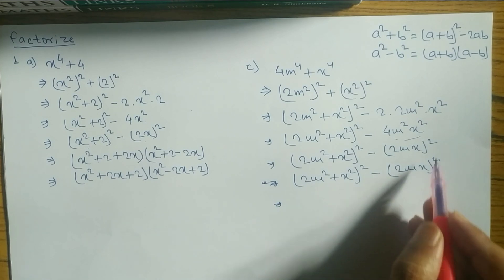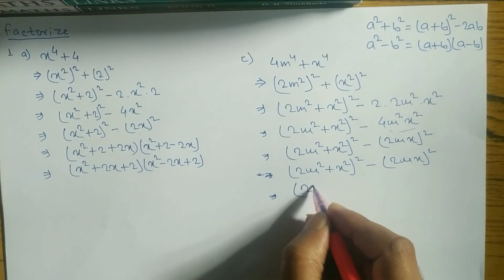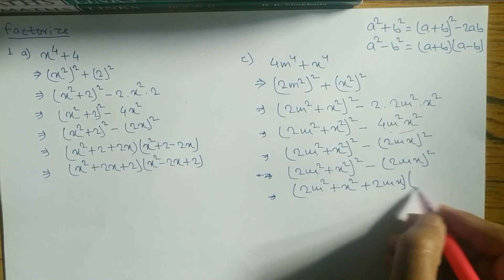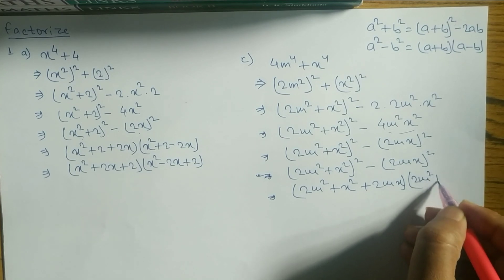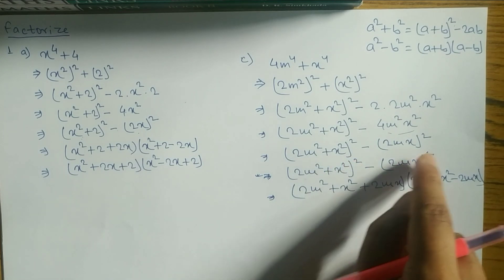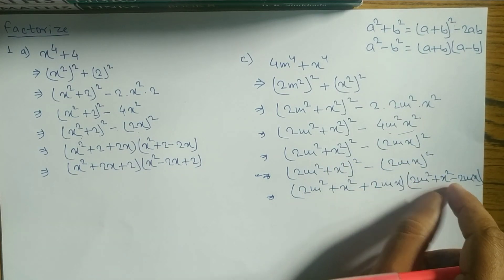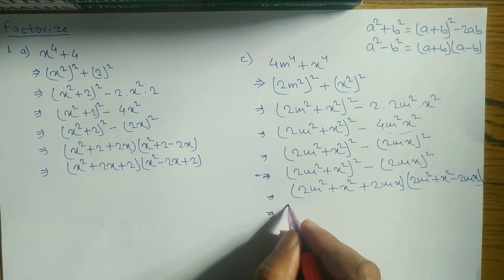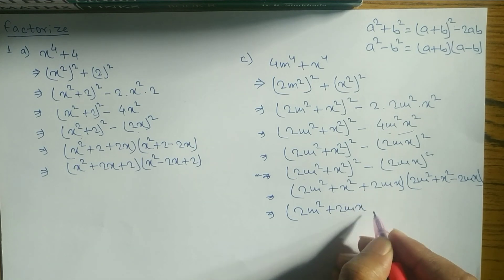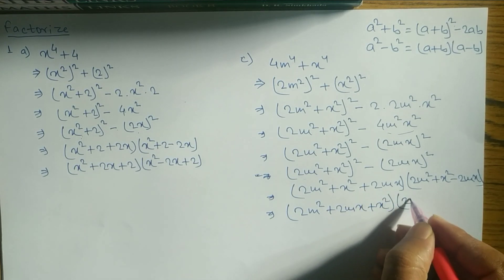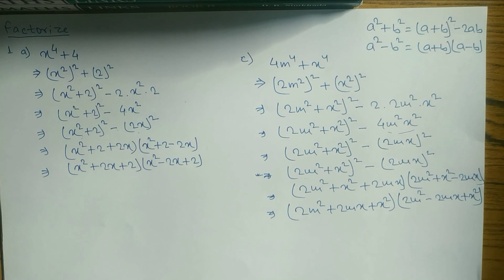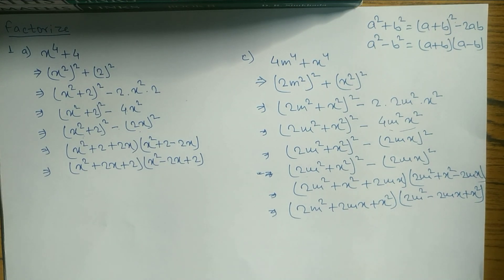This is now in the form of a² − b². The formula is (a + b)(a − b). So we write: (2m² + x² + 2mx)(2m² + x² − 2mx). Arranging the terms: (2m² + 2mx + x²)(2m² − 2mx + x²). Hope you understand this.